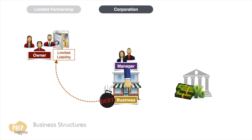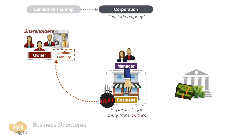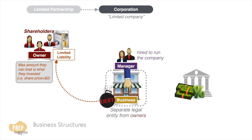An evolved model of the limited partnership is known as a limited company, more commonly known as a corporation. Under this structure, the business itself is a legal entity separate from its owners and managers. The owners are known as shareholders. Like a limited partnership, shareholders have limited liability — the maximum amount that the shareholders can lose is what they invested in the corporation, that is when the value of their shares go to zero. The managers are simply people hired to run the company, so they do not personally bear any liabilities from the company.